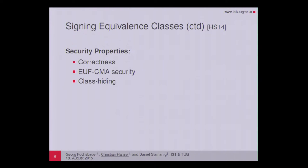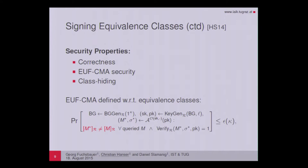Regarding security properties, we have correctness, EUF-CMA security, and a basic notion for the distribution of signatures termed class hiding, which we will supersede with stronger notions. This notion says that a random message-signature pair coming from a class we have already seen is indistinguishable from fresh random message-signature pairs. EUF-CMA security is defined with respect to equivalence classes: the adversary must output a forgery M-star, sigma-star such that M-star defines an equivalence class different from all classes covered by the signing queries.